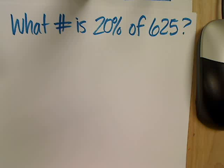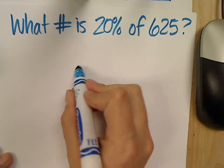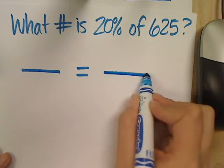Okay, so this one says, what number is 20% of 625? We're still going to set up a proportion, one ratio equal to another ratio.